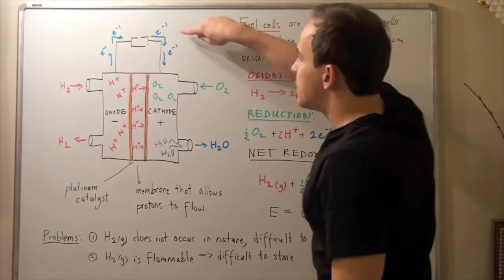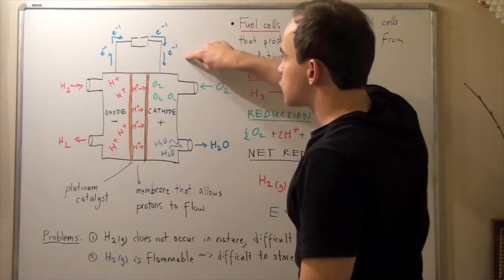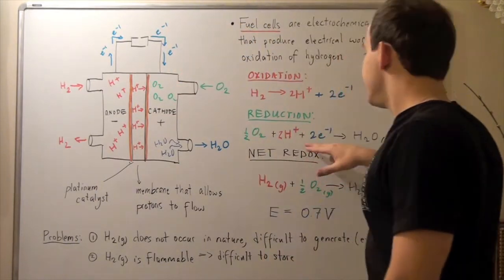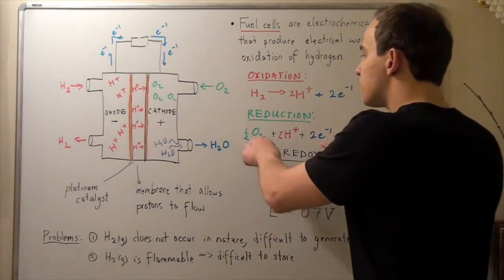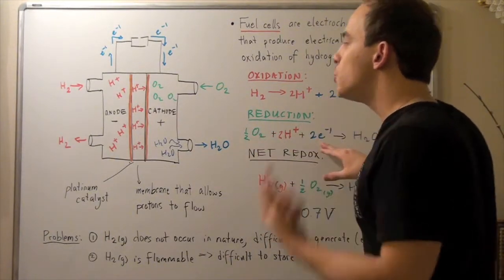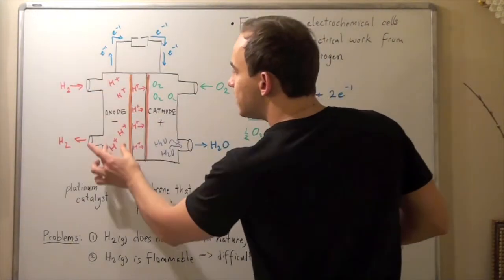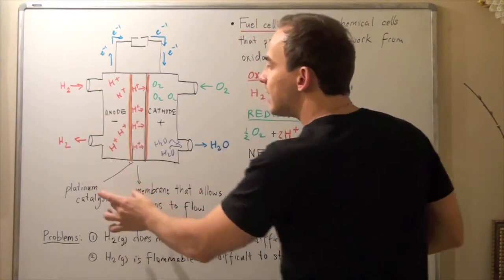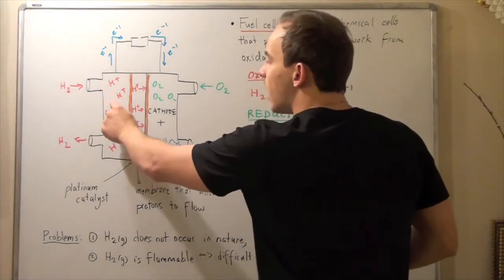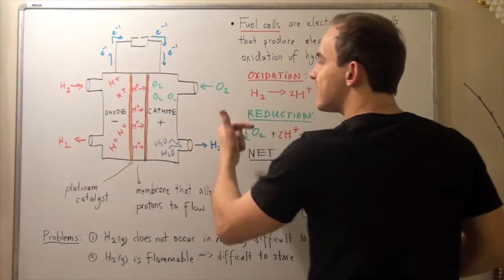Now, when these two electrons travel all the way down to this cathode, these electrons react with the oxygen molecule, reducing it. But notice that in order for this buildup of H-plus ions not to occur, these H-plus ions must pass to this side.